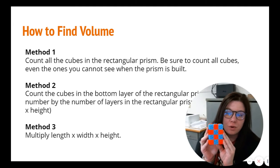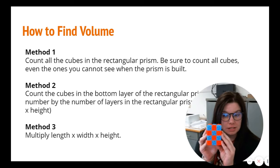Method one is just counting all the cubes in the rectangular prism, just one by one. But the trick with that is we have to make sure that we count all of them, even the ones we can't see.